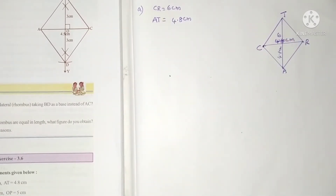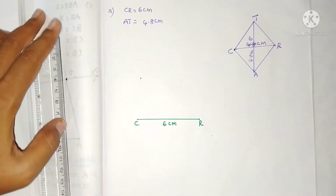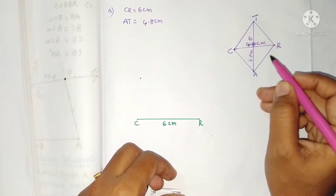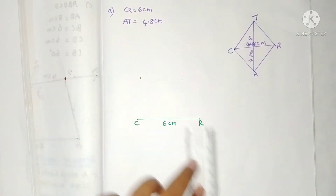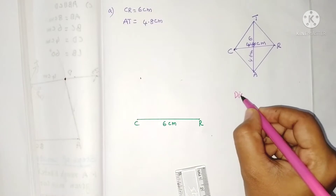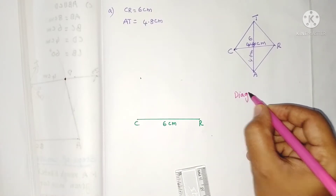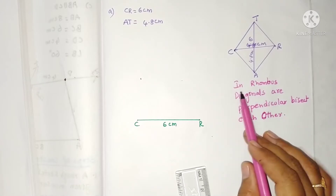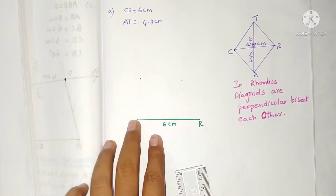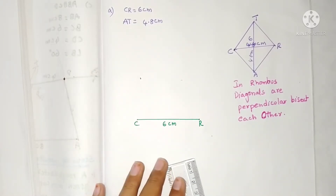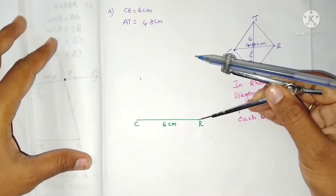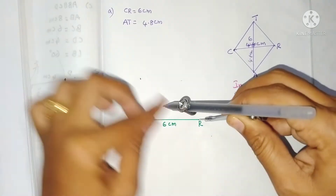First, draw the line segment CR of length 6 centimeters. Now we have to draw the second diagonal AT, but we cannot simply draw it. In the properties of a rhombus, diagonals are perpendicular bisectors of each other. So first draw the perpendicular bisector to CR.